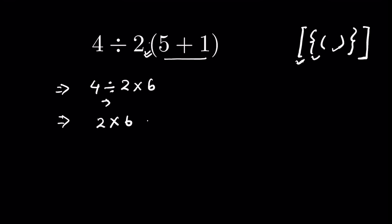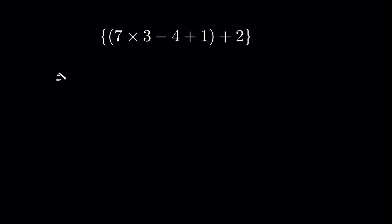Let's try another example where we have one curly bracket, and inside the parenthesis we have multiplication, addition, and subtraction. According to the BODMAS rule, we first solve the smaller bracket, and inside the smaller bracket we also follow the BODMAS rule. So first multiplication: 7 multiplied by 3 is 21, then we have minus 4 plus 1.